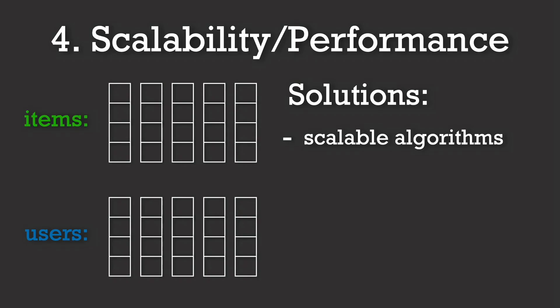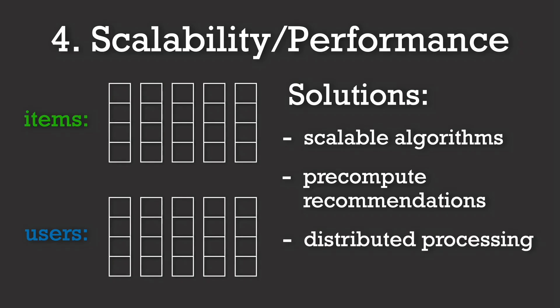Also, pre-computing recommendations offline using batch processing and caching popular results can reduce the load during peak times. Furthermore, distributed systems like Spark and parallel processing also play a huge role in scaling collaborative filtering and matrix factorization methods.